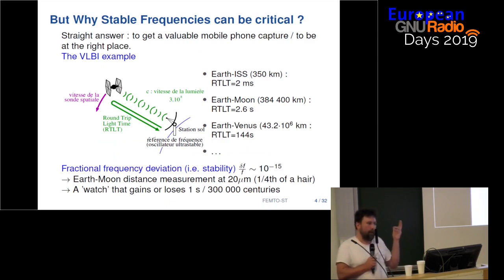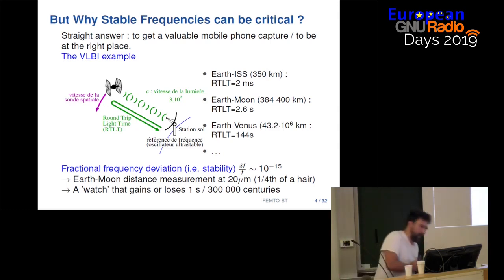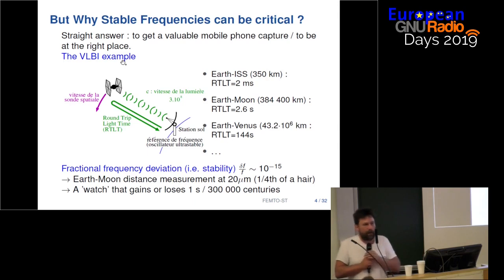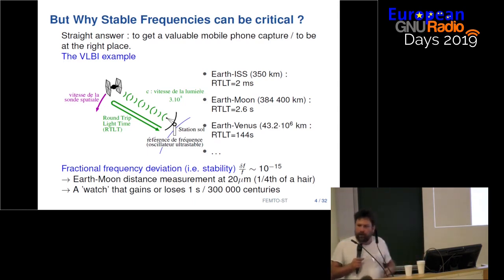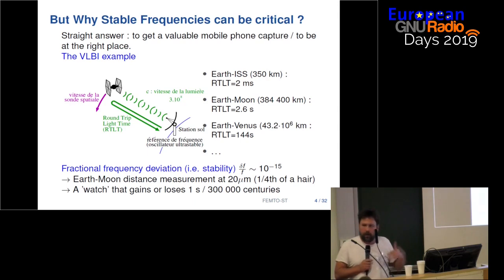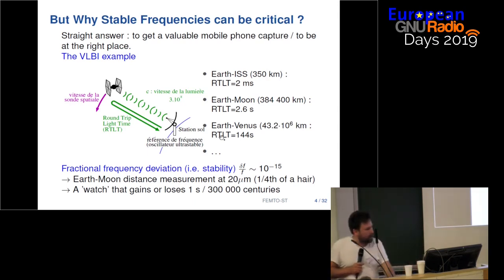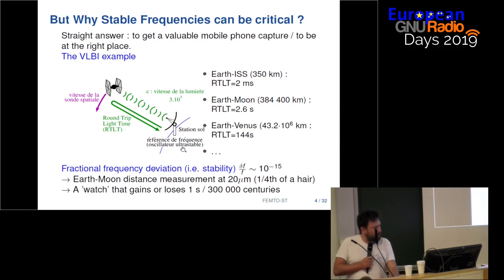Why do we need stable frequencies? The most straightforward answer is you want to have a great voice on your mobile phone and you want to be at the right place. I put the VLBI example, but it's more likely to be deep space tracking. Imagine you have a vessel, a spacecraft — the USS Enterprise — you want to localize it in space. You need to send an electromagnetic wave and wait for it to come back. During that round-trip time, your ground station oscillator-based reference must be stable.